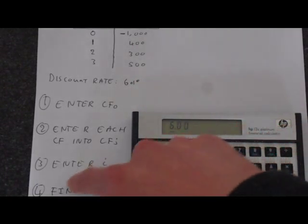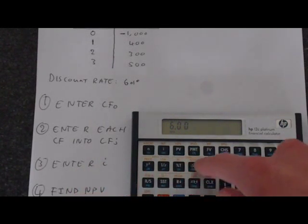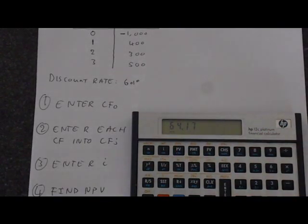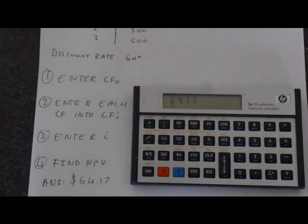Our I, 6, goes into I. And then just function and present value. And we get the net present value of 64.17. So that's how you calculate the net present value for even and uneven cash flows. Hopefully this has been helpful to you. Thank you for watching.